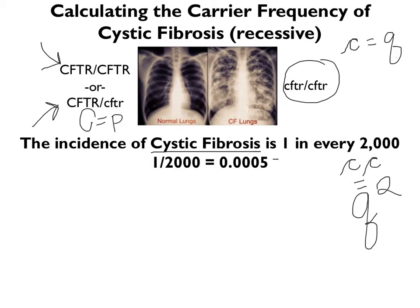Since cystic fibrosis is a recessive condition, one in every 2,000 individuals is little c, little c — which in the Hardy-Weinberg equation represents Q squared. One in 2,000 equals 0.0005. So Q squared equals 0.0005, because Q squared is the frequency of the homozygous recessive genotype. All we've done here is convert the given statistic about cystic fibrosis incidence into Hardy-Weinberg terms.